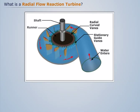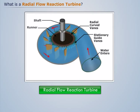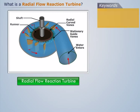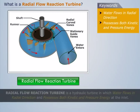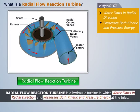This type of turbine, in which water flows radially and possesses both pressure and kinetic energy, is called a Radial Flow Reaction Turbine. Thus, a Radial Flow Reaction Turbine is a hydraulic turbine in which water flows in a radial direction and possesses both kinetic and pressure energy at the inlet.